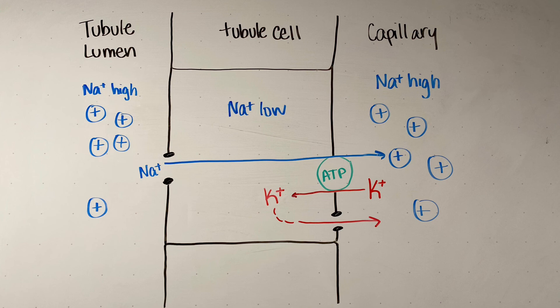We have a little friend to help us, and that friend is the sodium-potassium ATPase. This pump transfers three sodium ions into the plasma for every two potassium ions that it brings into the cell. Then, so that potassium does not build up inside the cell, it actually leaks back out through a channel on the side of the cell that's next to the plasma.